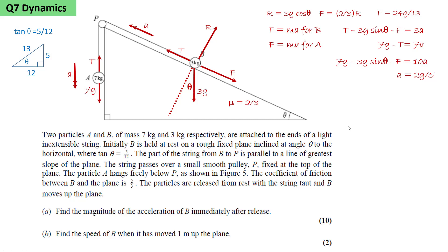We're then asked to calculate the speed of B when it has moved 1 meter up the plane. We're going to use v squared equals u squared plus 2as. The initial velocity is zero, the acceleration is 2g/5, and the distance s is 1. From this we can calculate that v equals 2.8 meters per second.